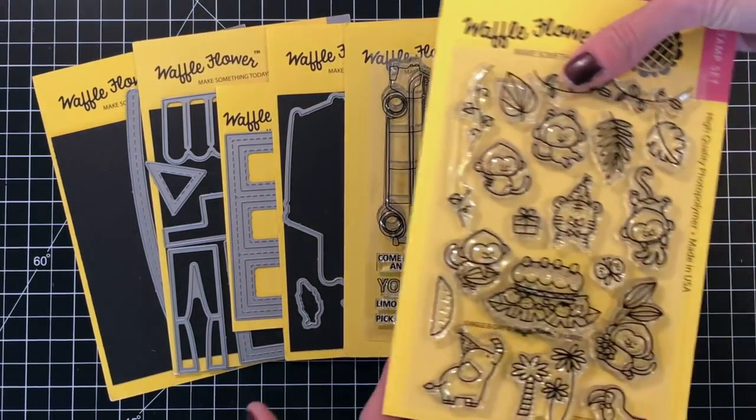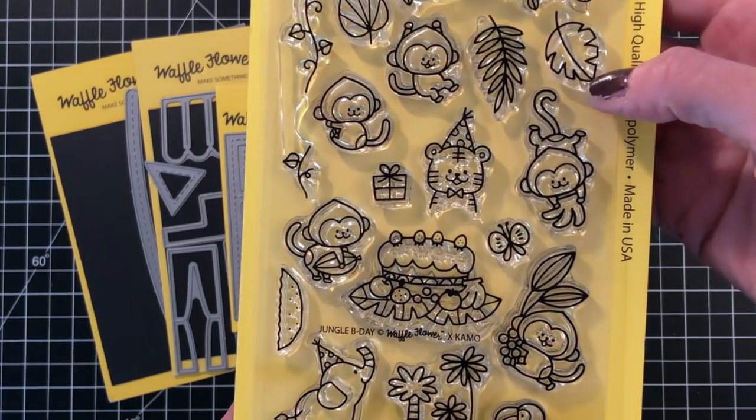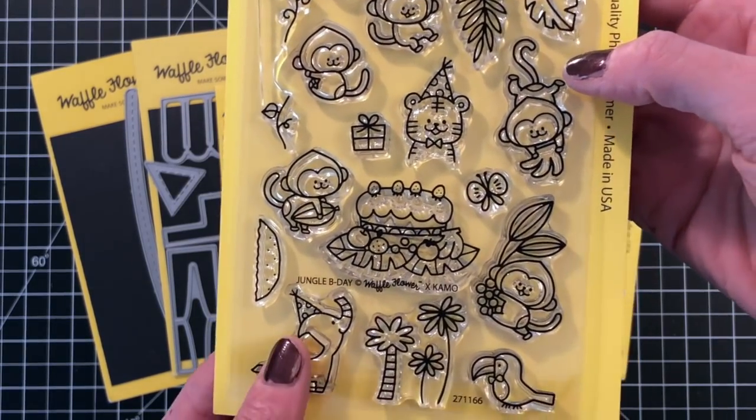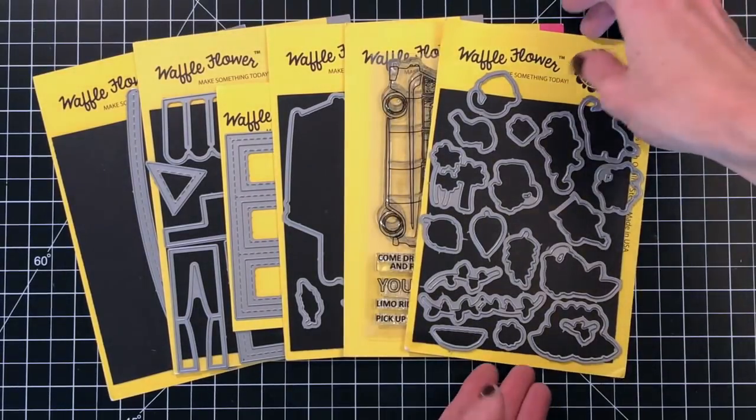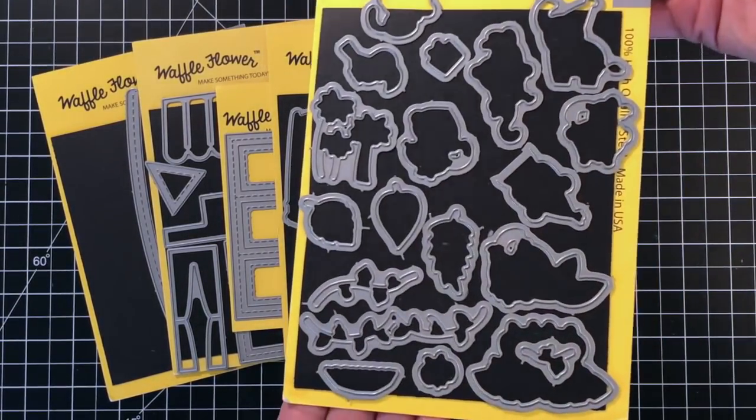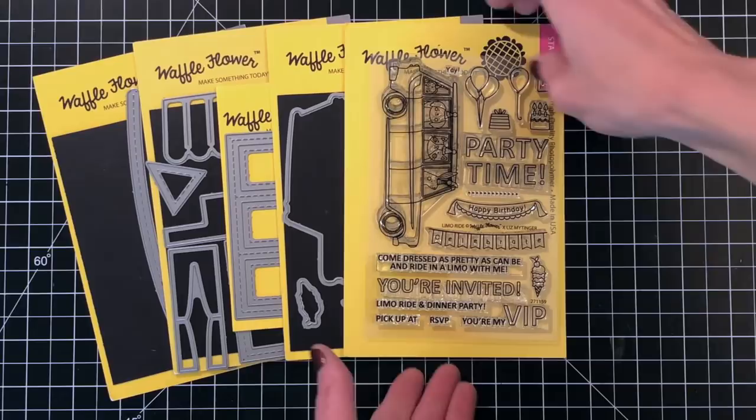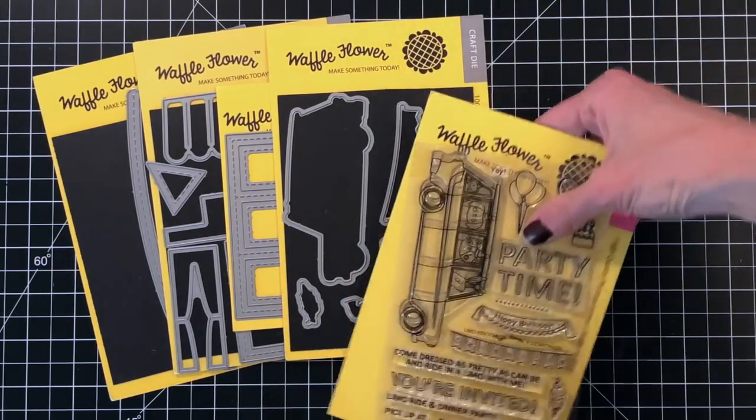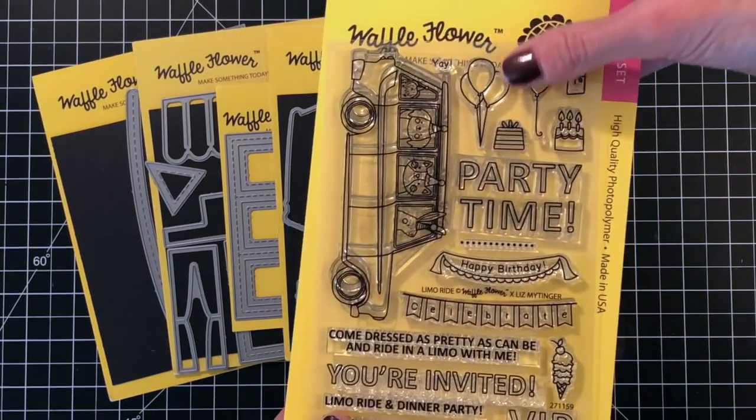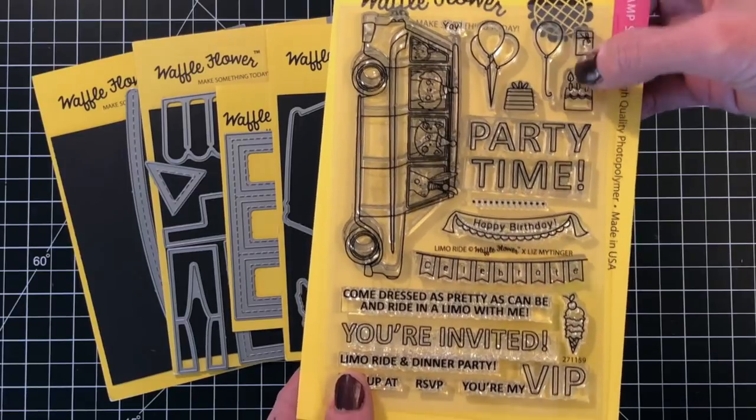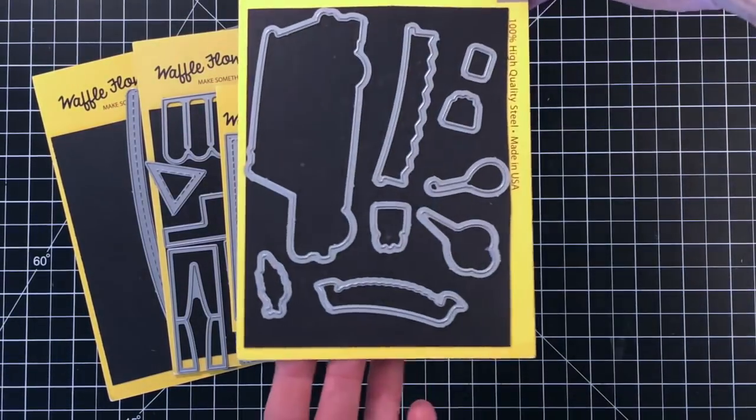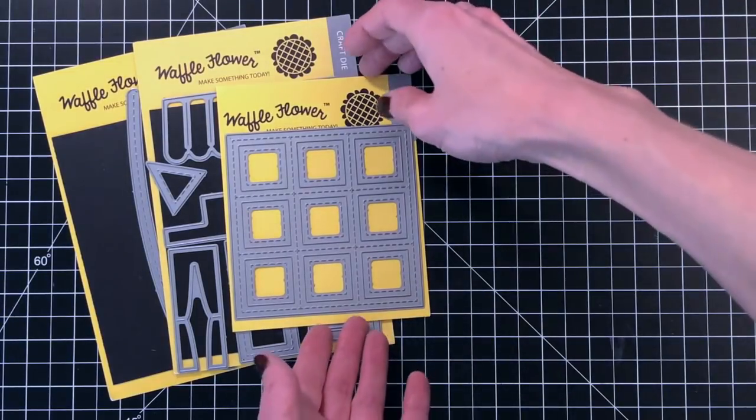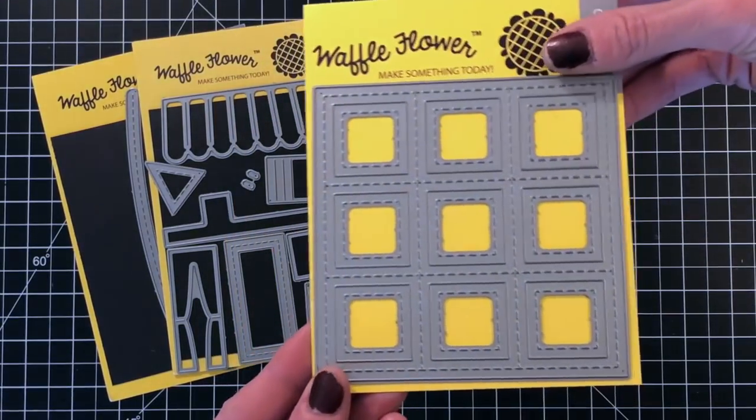I'll be using these new products from Waffle Flower Spring Release. First up is the Jungle Birthday Stamp Set illustrated by Como. I really love the cute little animals in this set, especially the monkeys. I'll be using the matching dies as well. Also, I'll use this set by Liz called Limo Ride. I'm going to use a lot of the presents and a cake and balloons from that set and the matching dies.